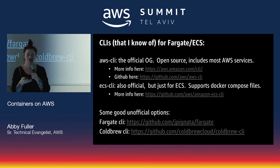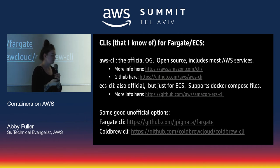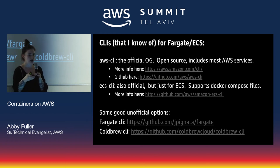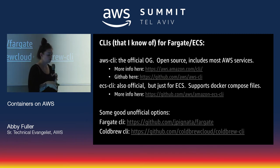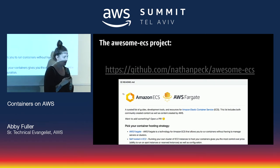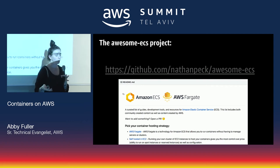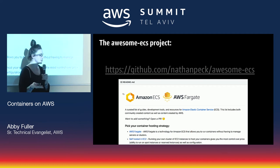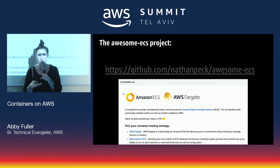There are also some really good unofficial CLIs. One that I really like for Fargate is the Fargate CLI, made by one of the AWS SAs — it feels very much like the Docker CLI: 'fargate task run nginx', 'fargate stop nginx'. There's also one that works for ECS and Fargate called the Cold Brew CLI that a lot of people are quite happy with.